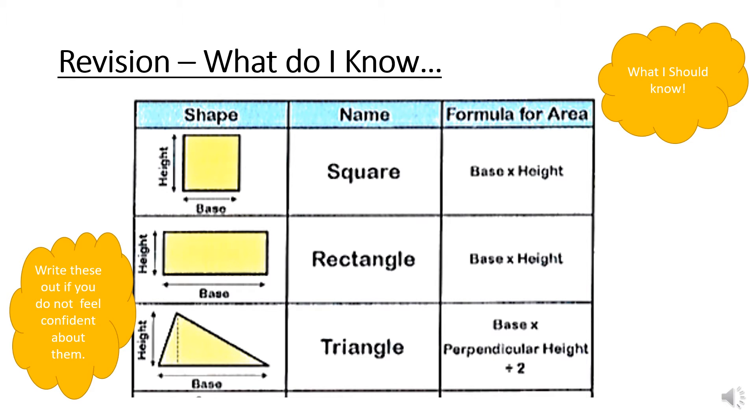So let's go through our revision. What do I know? Now these are the things that you should know and if you don't, it's time to write some notes down. Remember, use those highlighters, different colour pens if you need to because it will make it all clear in your heads. You can draw a table just like this, making sure that you're labelling, using that ruler correctly, making sure your work is nicely spread out. You're writing down the shapes, the names, the formula of area. Here we've got a square, with the height and the base.